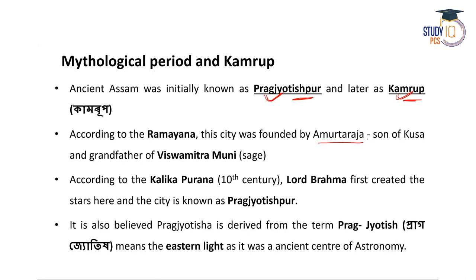According to the Kalikapurana, a 10th century text and a very important source of history, Lord Brahma created the stars first in this location, and hence the city is known as Pragjyotishpur. It is also believed that the name Pragjyotish is derived from the terms 'Prag' meaning east and 'Jyotish' meaning light — so Pragjyotishpur means 'eastern light,' as it was believed to be an ancient center of astronomy.